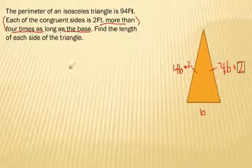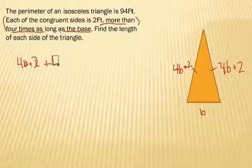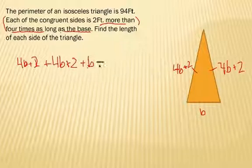Now, we're going to solve the equation. We know that all three sides, 4B plus 2, the other 4B plus 2, and the base itself, which is just B, that whole thing, the perimeter is 94. Because the perimeter, of course, is when you add everything together.